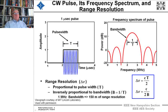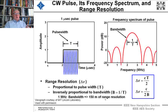Range resolution ΔR is proportional to the pulse width: ΔR = cT/2, and inversely proportional to the bandwidth. So if we go to higher bandwidth we get smaller resolution. A one-megahertz bandwidth corresponds to about 150 meters of range resolution.